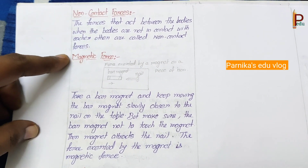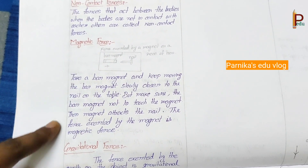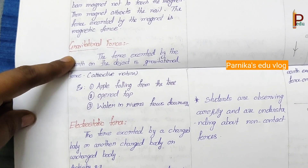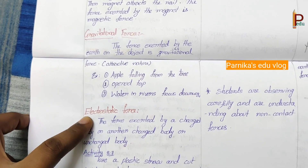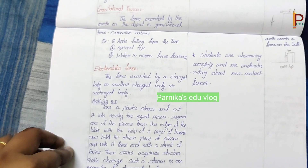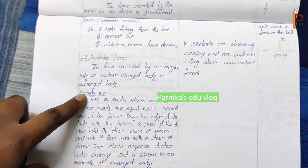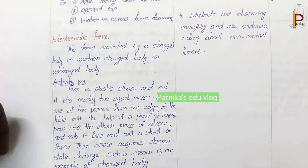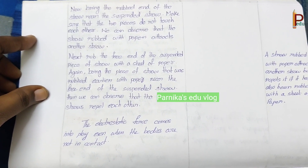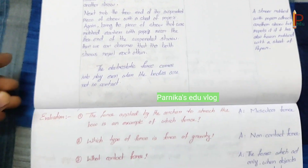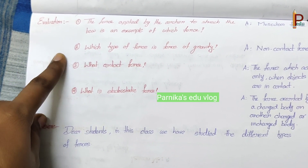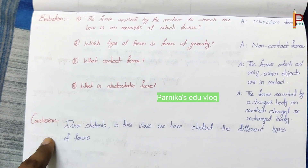Next, non-contact forces — in this we have: first, magnetic force, which you can explain with a magnet and a nail. Second, gravitational force with its definition and examples. Third, electrostatic force — here we conduct a small activity, Activity 8.7, so that students can easily understand. Evaluation — these are the questions and expected answers. And finally, conclusion.